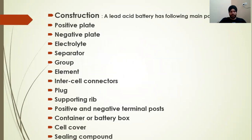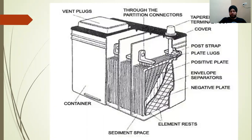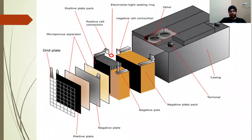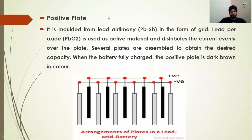Looking at the diagram of the battery, we can clearly see the different parts. The battery has a case and individually different parts — a total of 12 individual parts — each with a specific function and material. We will study all of these parts.